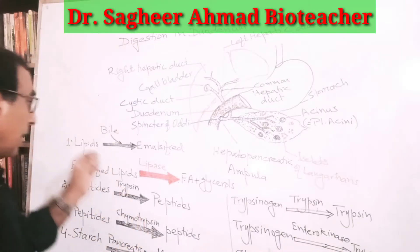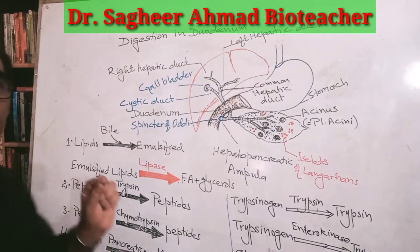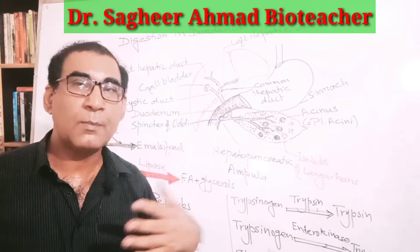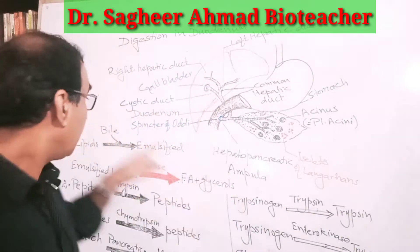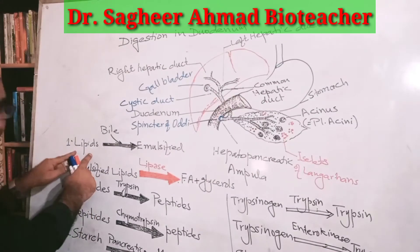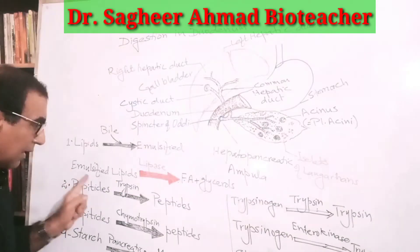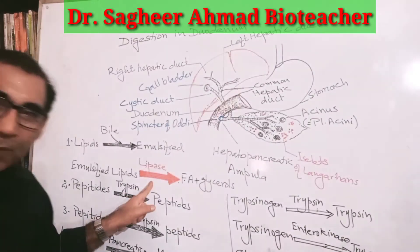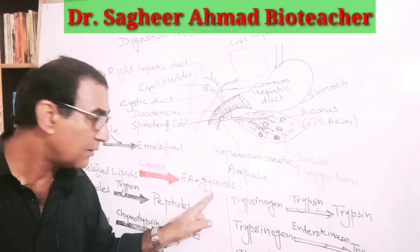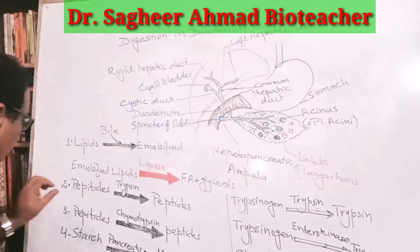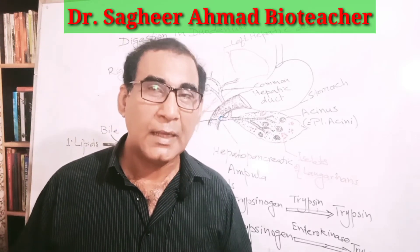The digestion of lipids takes place in two stages. The first is emulsification of lipids — since lipids are large molecules, they are emulsified by bile. The emulsified lipids are then acted upon by lipase, which converts them into fatty acids and glycerol.